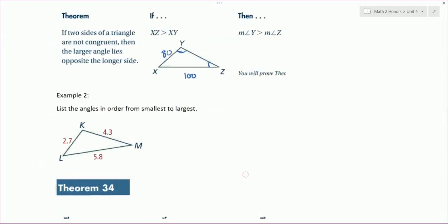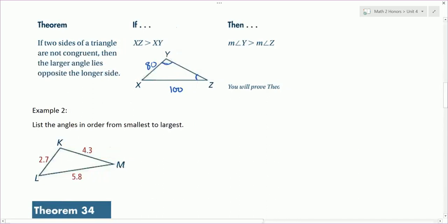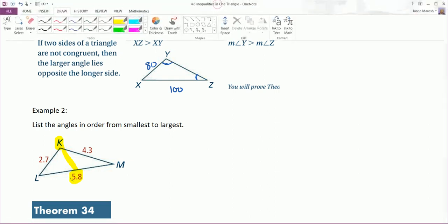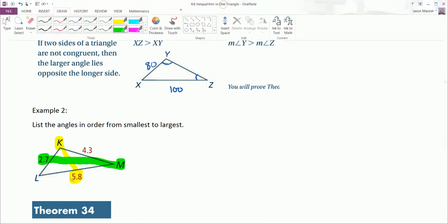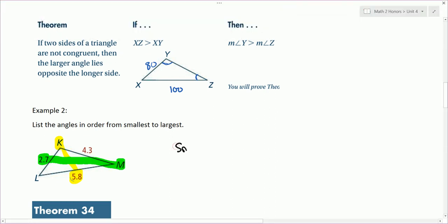Let's look at example two. We're going to list the angles in order from smallest to largest. The largest side length is 5.8, and that is across from angle K — so that's the largest angle. The smallest side length is 2.7, and that's going to be across from the smallest angle. So listing from smallest to largest: the smallest angle is angle M, the largest is angle K, and in between we have angle L.